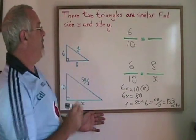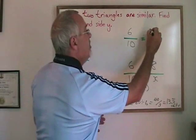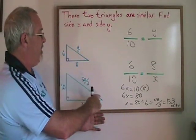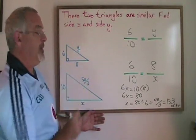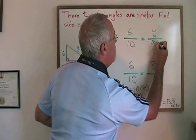To find side y, it is part of the smaller triangle, so therefore it will go on the top of the proportion with the 6. The side that is similar to y in the bigger triangle is this hypotenuse which is 50 thirds units in length, so I write 50 thirds here.